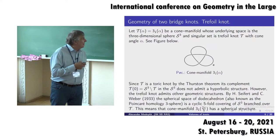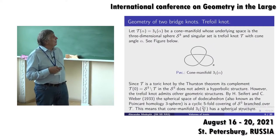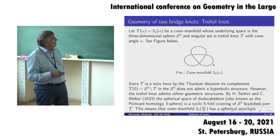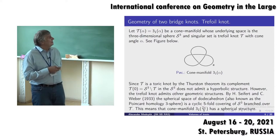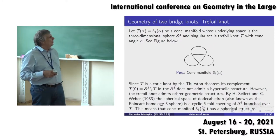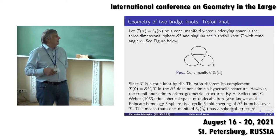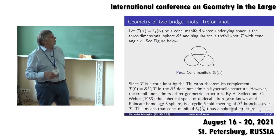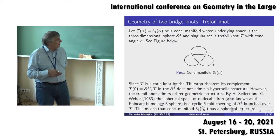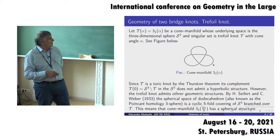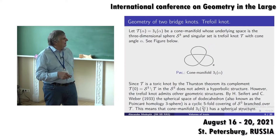Now consider the so-called trefoil knot, shown here inside a three-dimensional sphere. Outside we have some geometry of constant curvature, and the total cone angle around the component of this knot is α. It is well known that this knot is not hyperbolic, because by Thurston's theorem the complement of the trefoil has no hyperbolic structure. But there are many other geometries related with this knot. Indeed, Seifert and Weber constructed the so-called spherical space of the dodecahedron, also known as the Poincaré homology sphere, as a fold covering of the sphere branched over the trefoil. In our language, this means that the cone manifold — trefoil with cone angle 2π/5 — has a spherical structure.